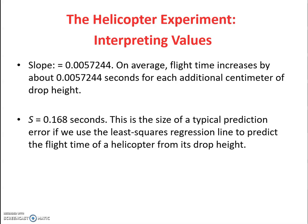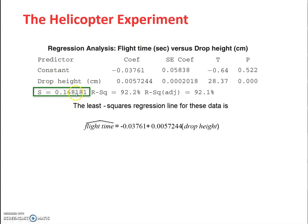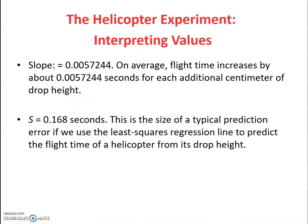Interpreting s here, which was 0.168 seconds. This is the size of a typical prediction error if we were to use the least squares regression line to predict the flight time of a helicopter from its drop height. Remember, standard deviation tells you how far you are from what you think it should be, whether it be mean or in this case, the predicted value and the actual value.